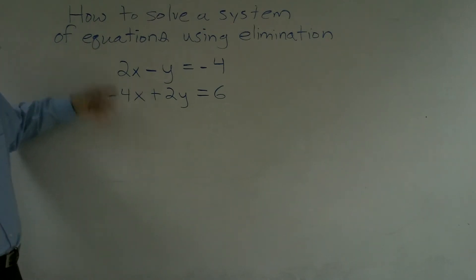This is a positive 2x and a minus 4x, that's going to give me negative 4x. And adding these two equations up here, this is going to give me a y.